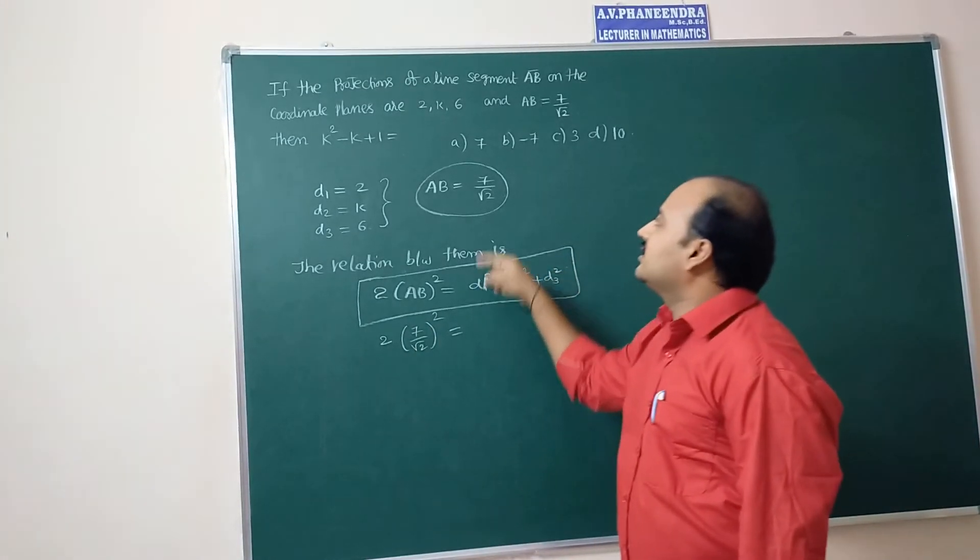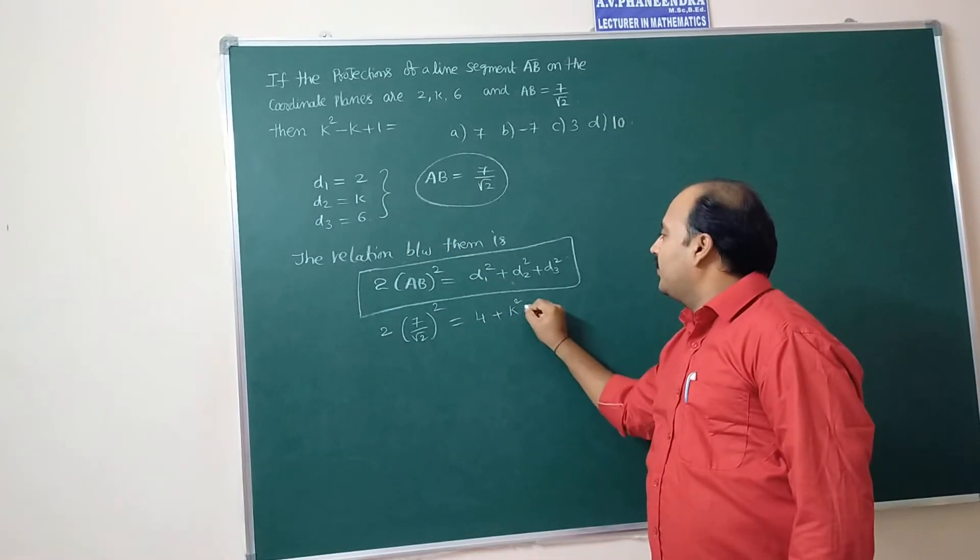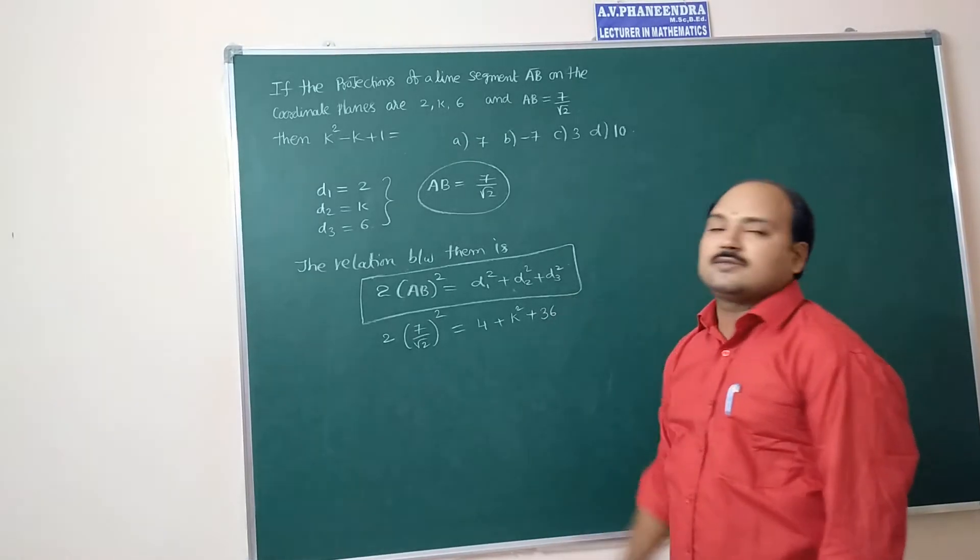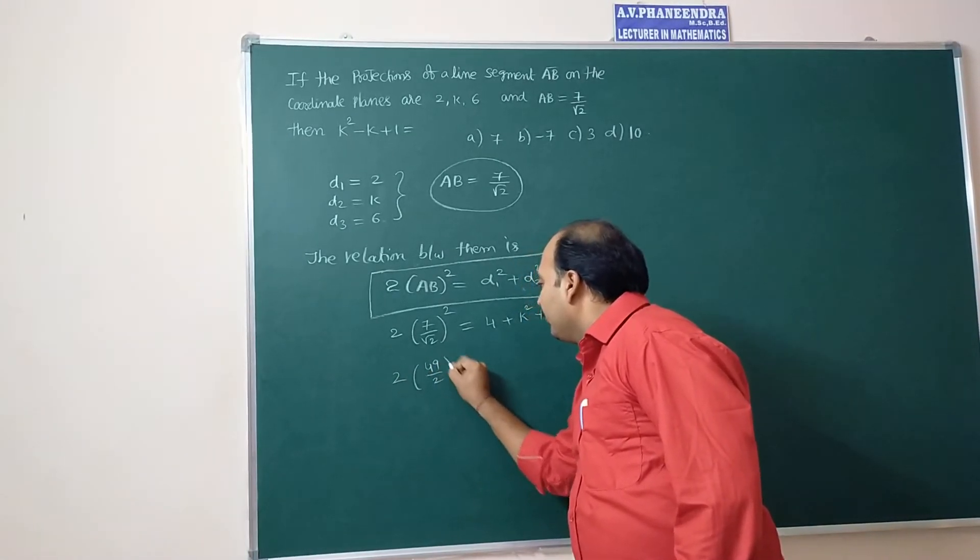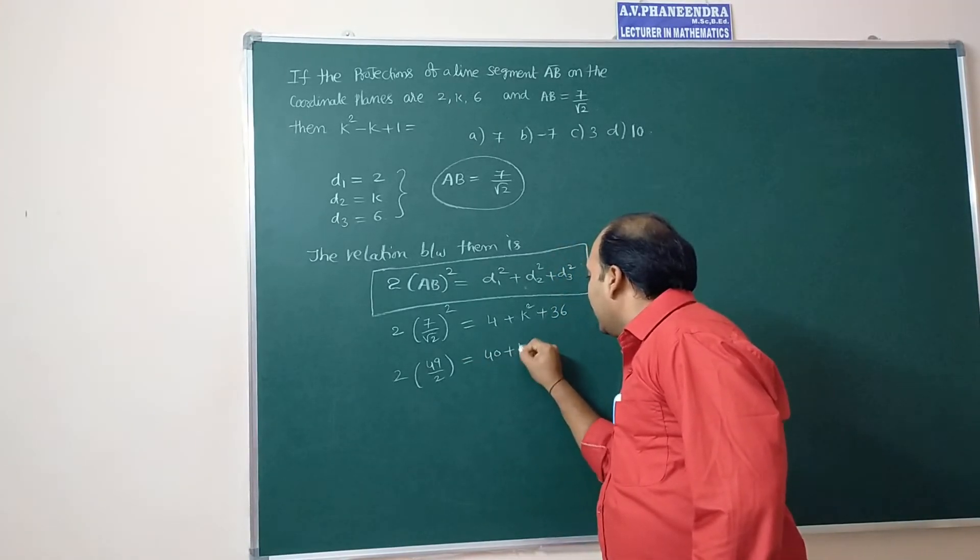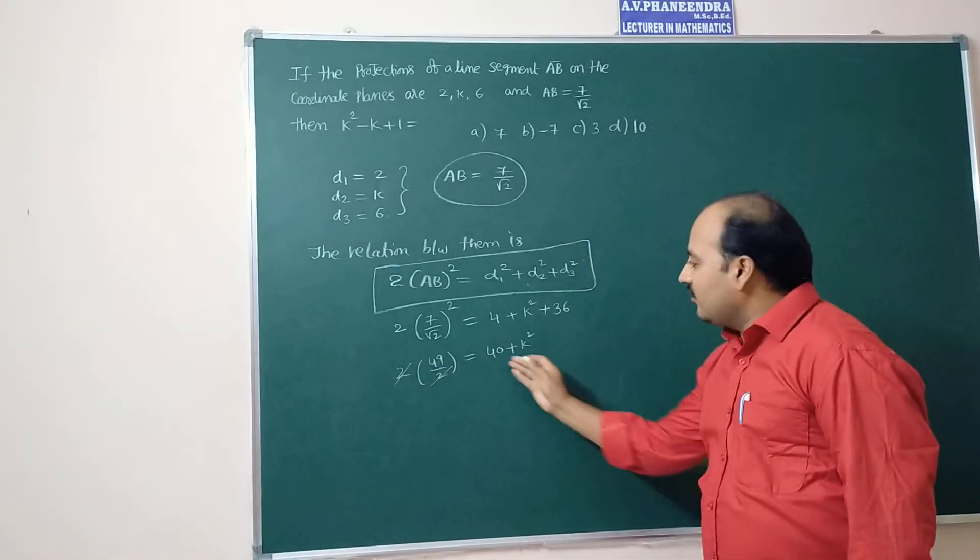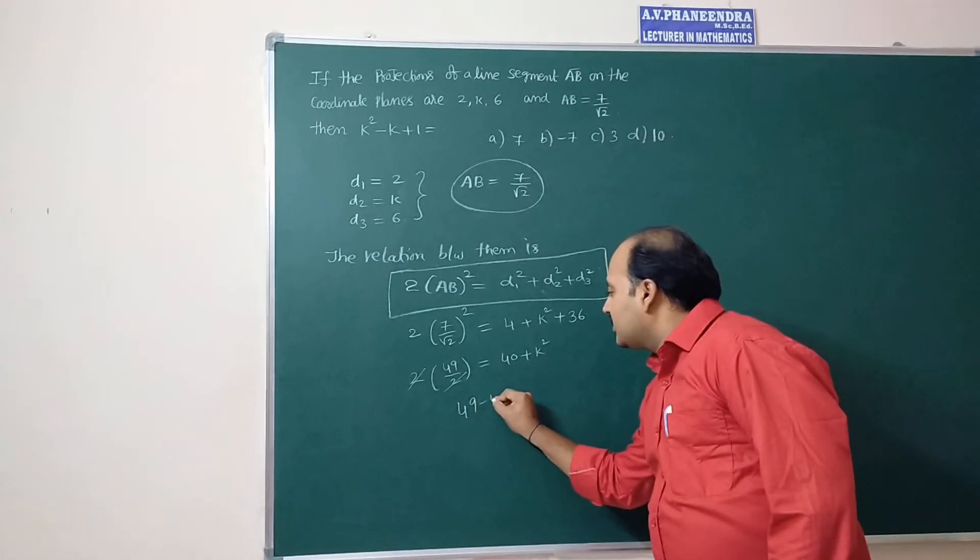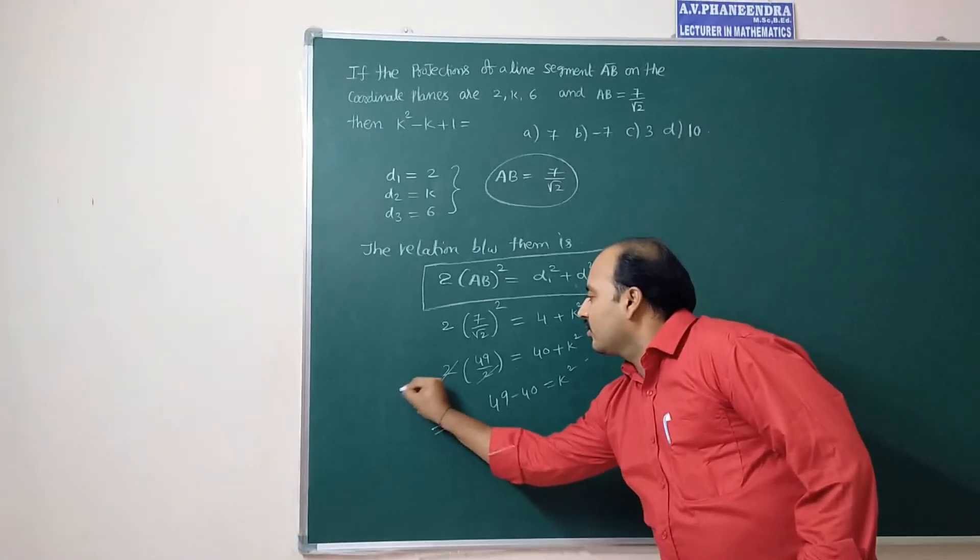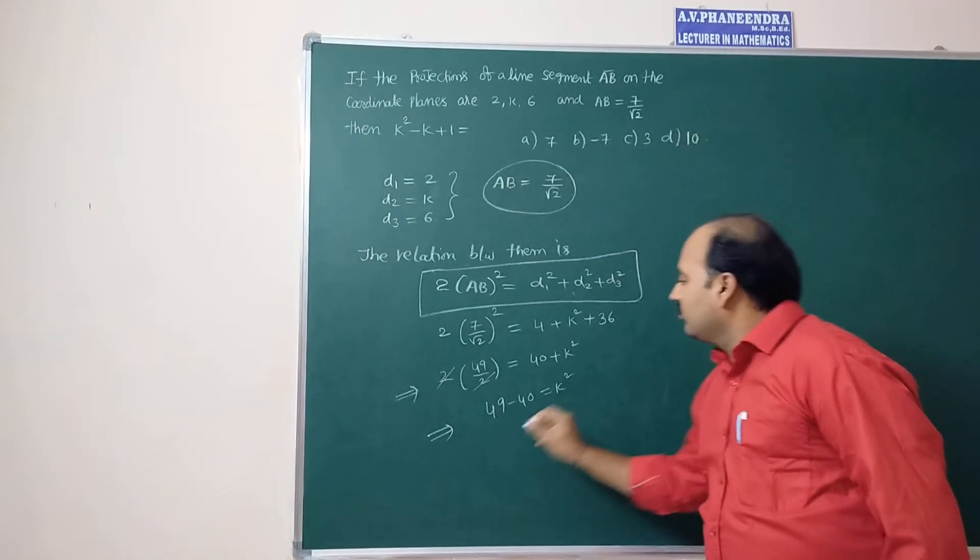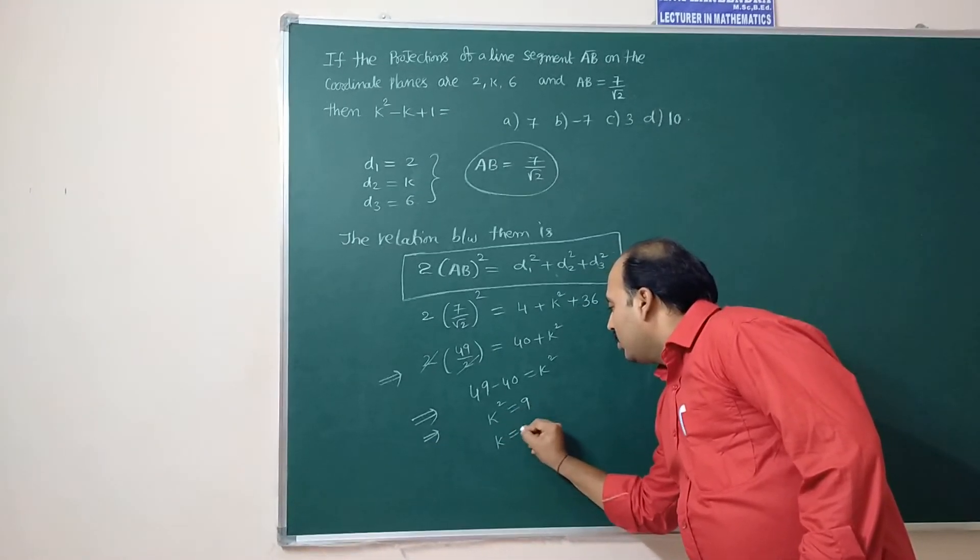Which is equal to d1 square, that means 2 square, plus d2 square, that means k square, plus d3 square, 36. So 2 into 49 by 2 is equal to 40 plus k square. 40 we are taking this side, 49 minus 40 is equal to k square. That implies k square is equal to 9, k is equal to 3.